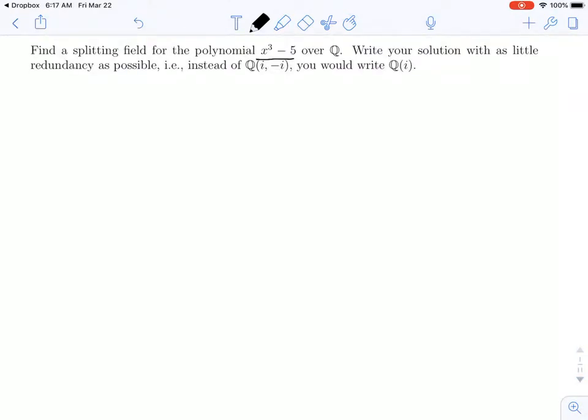So, I start by taking this polynomial x cubed minus 5 and looking for a root. Well, pretty quickly, we see we get a cube root of 5, right? Because if I take the cube root of 5 and I cube it, I will get 5, and so of course, then if I subtract 5, I'll get 0.